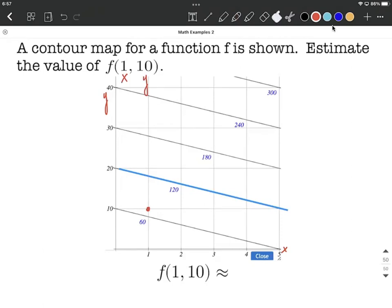The next thing we're going to do is try to estimate where exactly that is. So this is going to require looking at our contour lines. We have one going across here at 60, then we have another one going across here at 120.